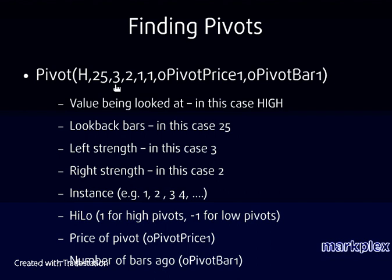The next parameter is the left strength — the number of bars to the left of the pivot that must be less than the pivot to qualify it. The following number is the right strength — the number of bars to the right of the pivot that must also be less than the pivot. It could be 1, 2, 3, 4, or more — that's entirely up to you.